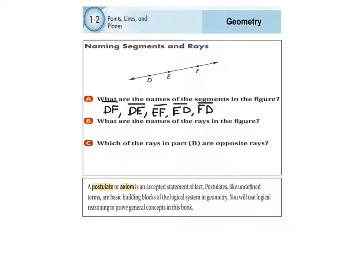Now, what are the names of the rays in the figure, part B? Remember, a ray has a starting point but it doesn't have an ending point. The key is that you pick one of the letters and then pick a direction you want it to go. For example, let's start with E — I want to start at E and go to the right toward F.